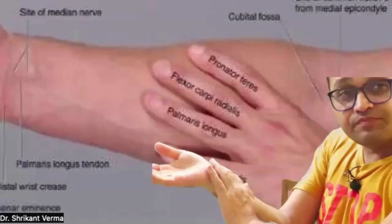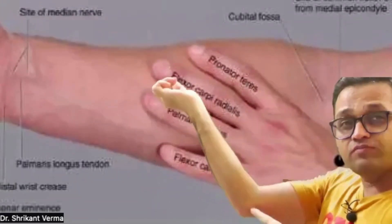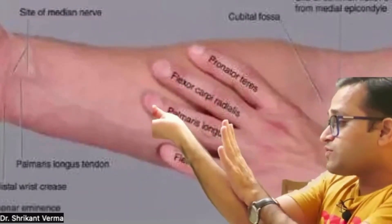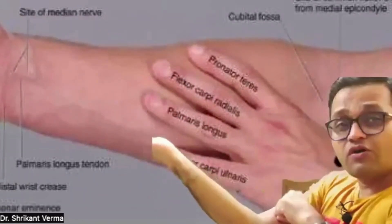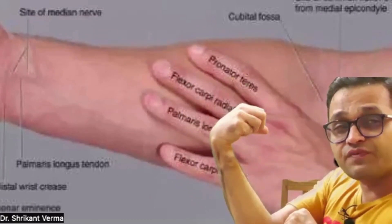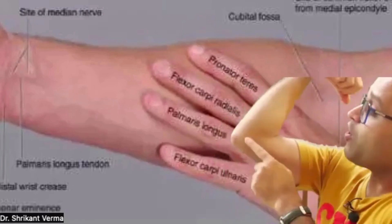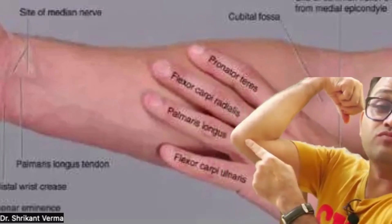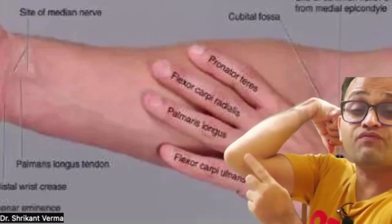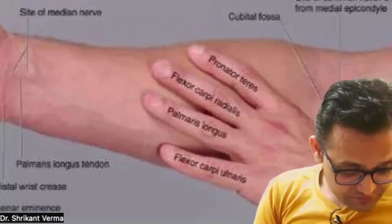These muscles are taking origin from the medial epicondyle. As they continue they will cause flexion of the fingers, so these are the flexor muscles. All are taking origin from the medial epicondyle, which is also known as the common flexor origin.